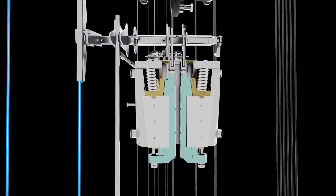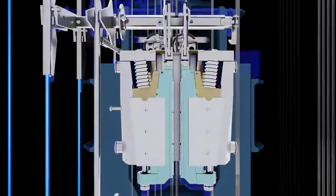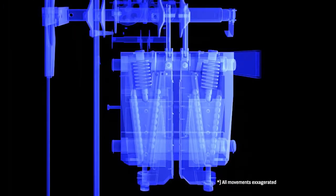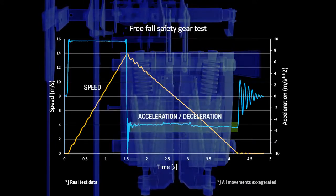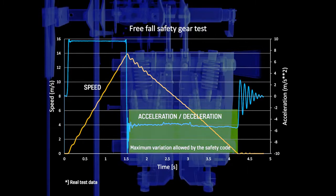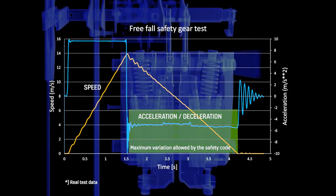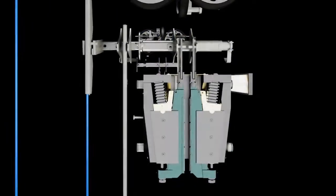KONE's high-speed safety gear has a built-in mechanical servo functionality that automatically adjusts the braking force, making sure the elevator slows down safely within elevator safety codes, preventing a sudden stop.